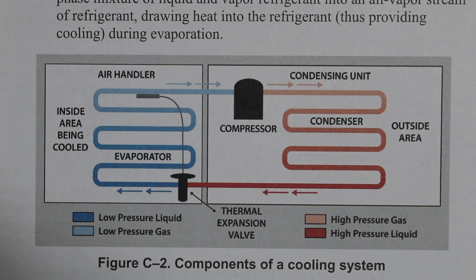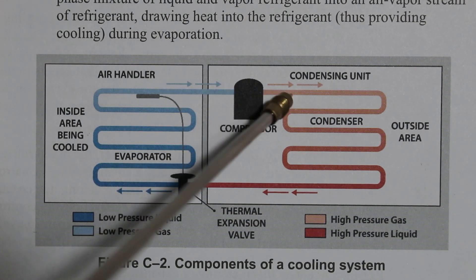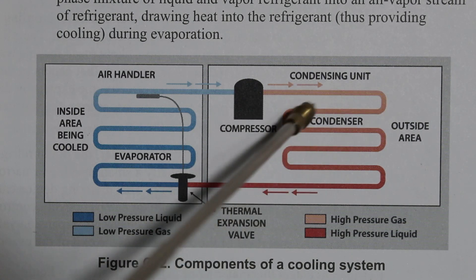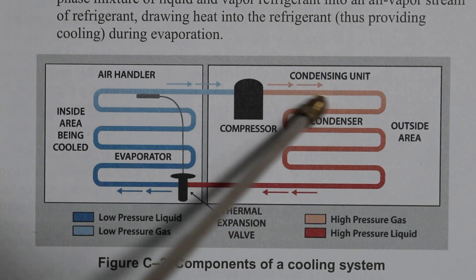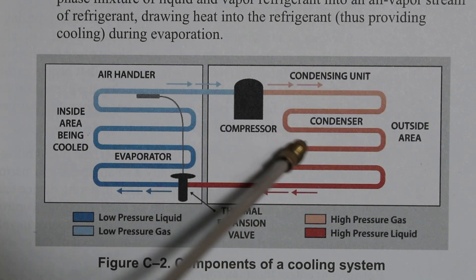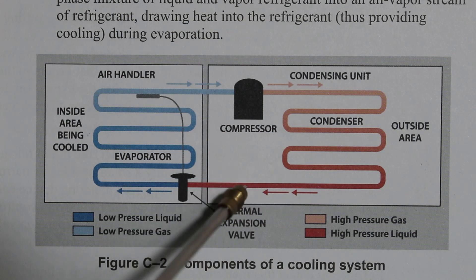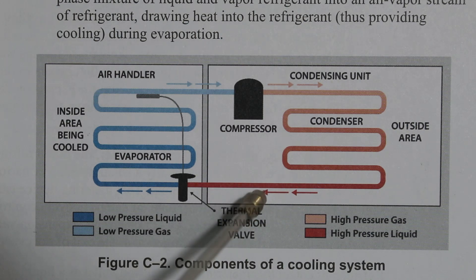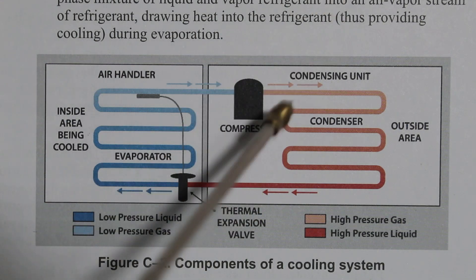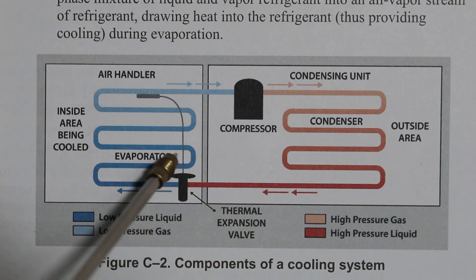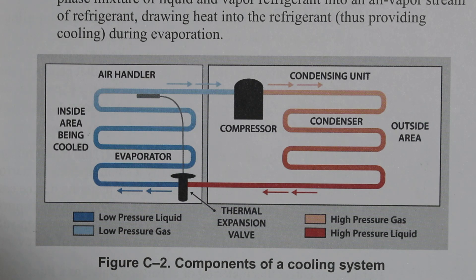Now that we know the state of the refrigerant entering and leaving the condenser, it's also important to note the names of the pipes. The pipe leaving your compressor and entering your condenser is known as your discharge line. The pipe leaving your condenser and entering your metering device is called your liquid line. Refrigerant then continues the path and we enter our third major component — the metering device.